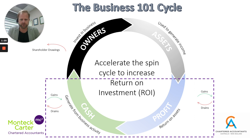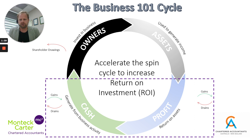This week we are moving on to the cash side of the Business 101 cycle — essentially how we can turn our profits into cash faster. As we know, cash is king; it's the lifeblood of the business, but it's often forgotten about and people don't put enough emphasis on their cash.